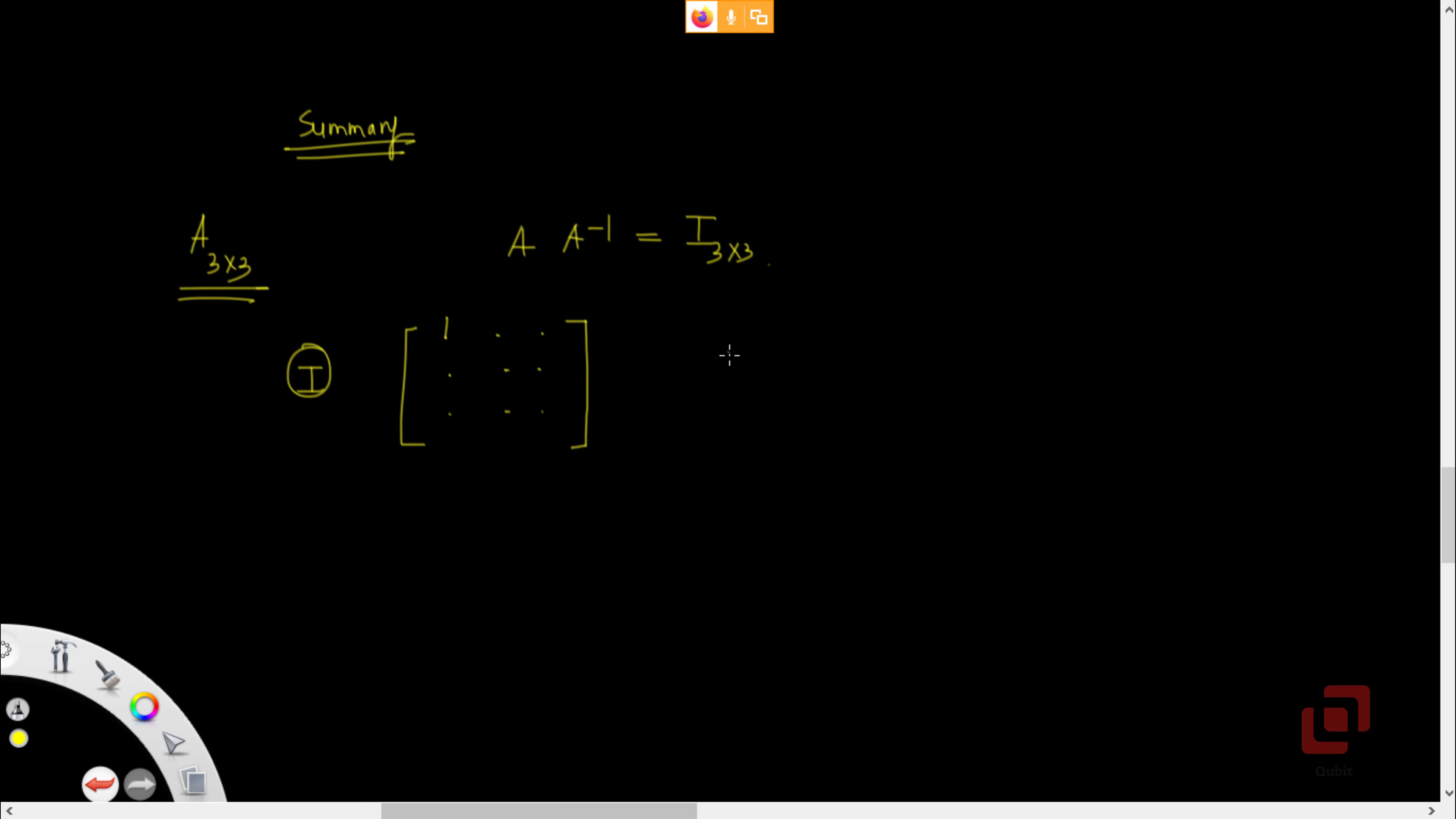Then in the second step, what do we do? Using the one which we obtained in the previous step, we get the two elements below 1 in the first column to be 0s. The rest of the matrix is unchanged.